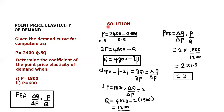We've been given this demand function, but it's not in standard form — it shows price as a function of quantity, which is called the inverse demand function. We need to convert it to a normal demand function with Q as the subject. Dividing both sides by 0.5 gives 2P = 4800 − Q, then rearranging gives Q = 4800 − 2P. This is the standard form. Whenever you are given a demand function as P as a function of Q, you must first convert it to Q as a function of P.